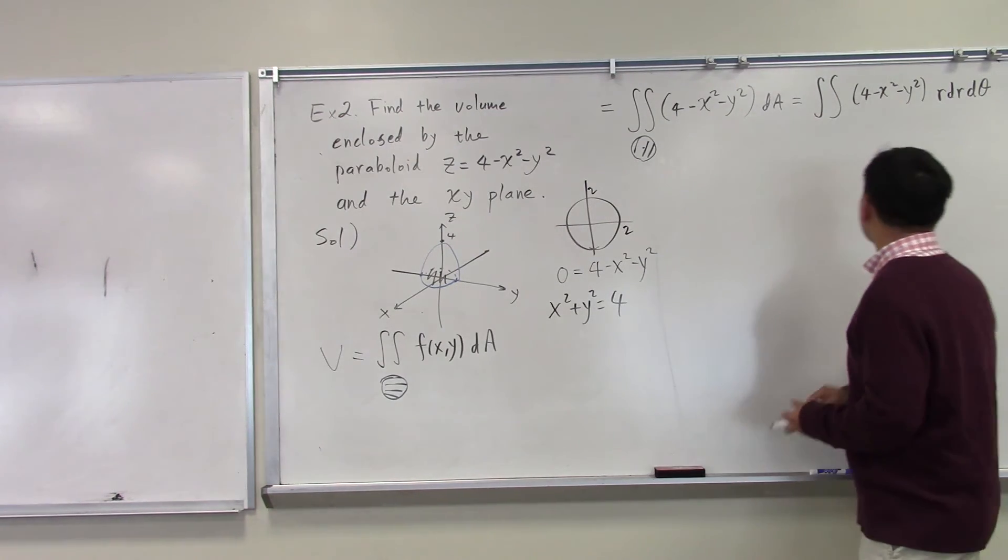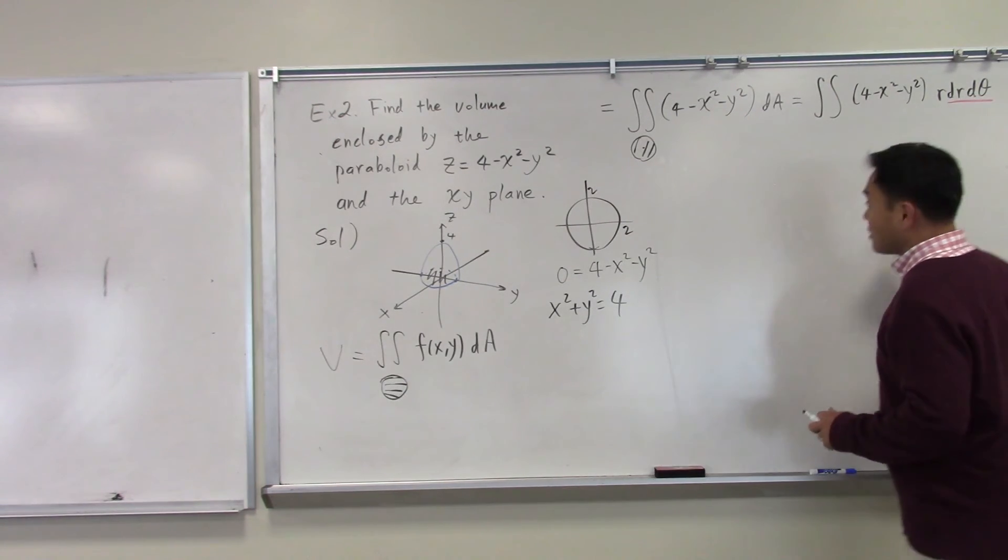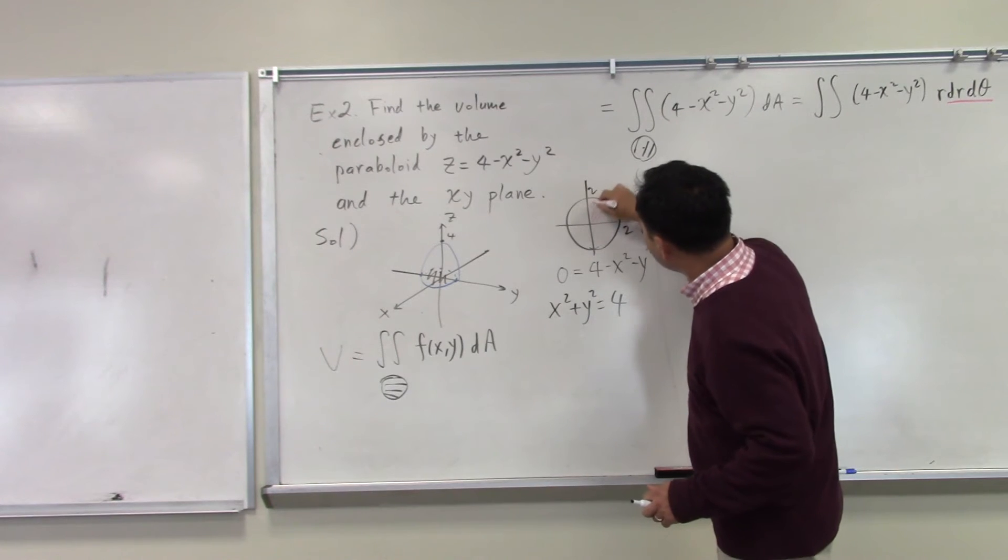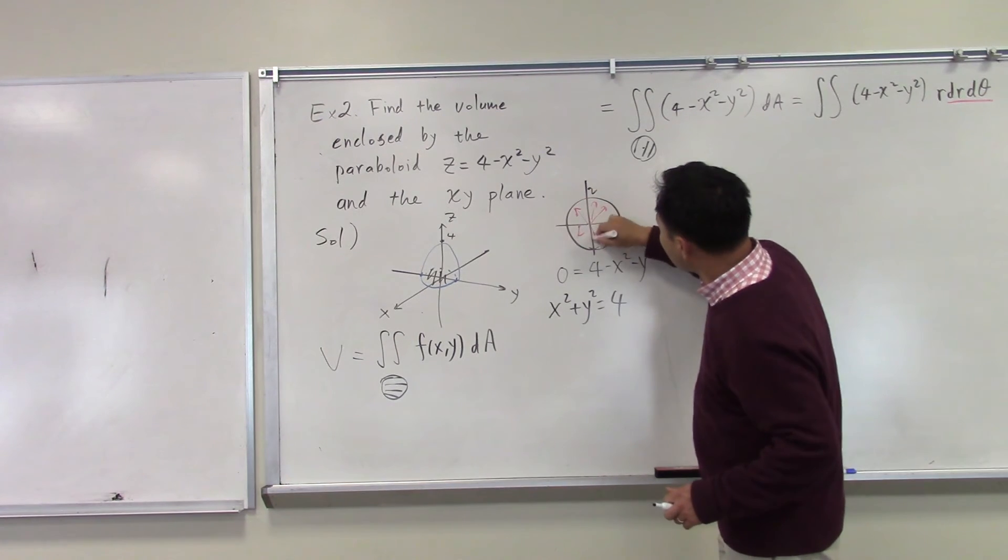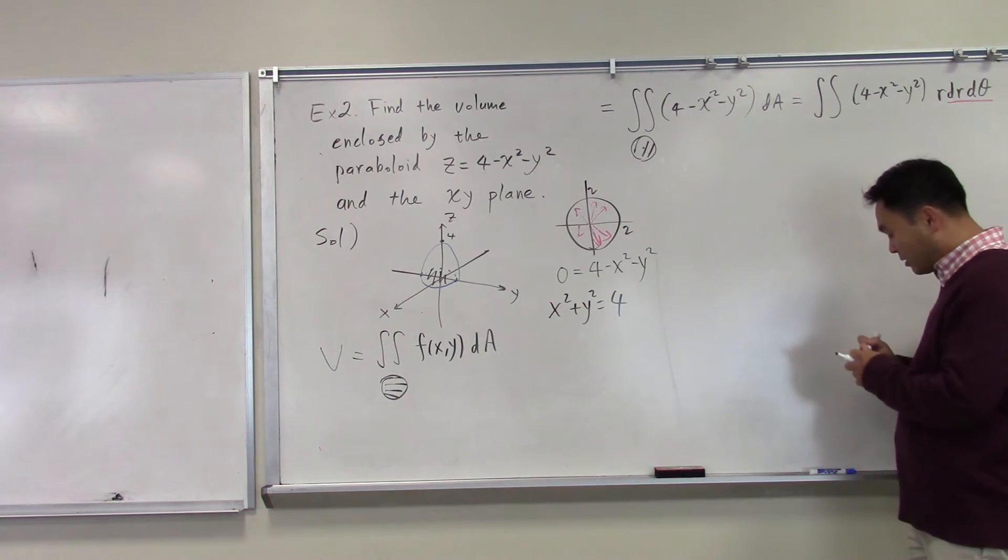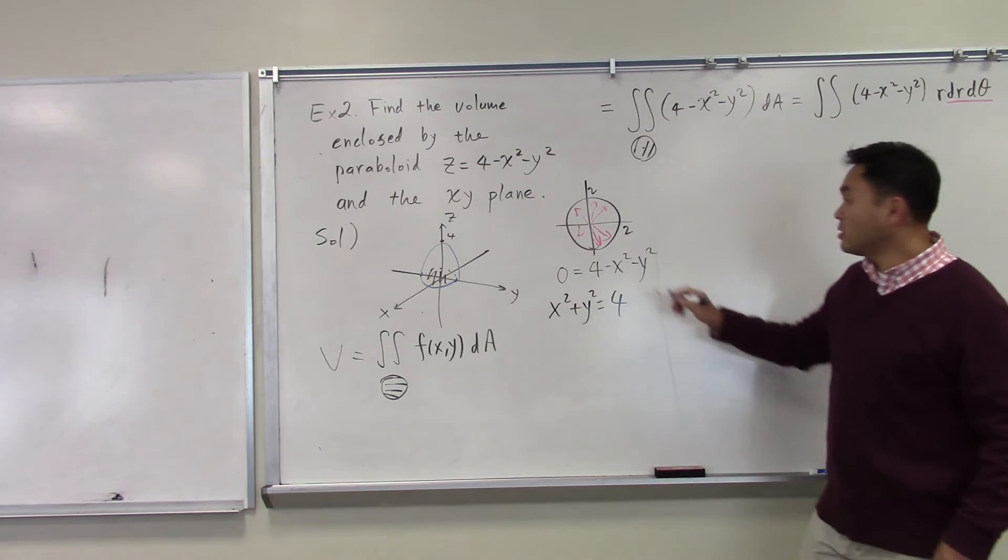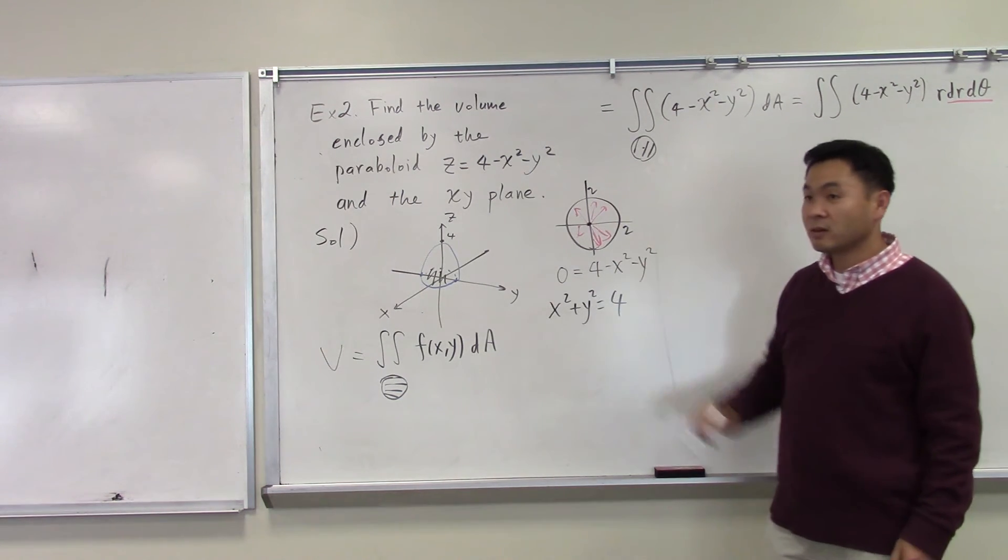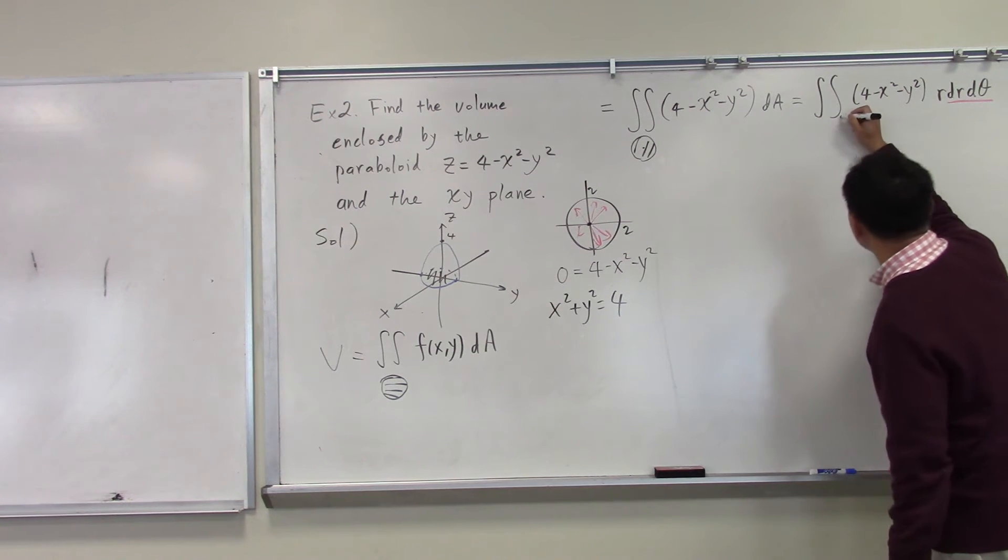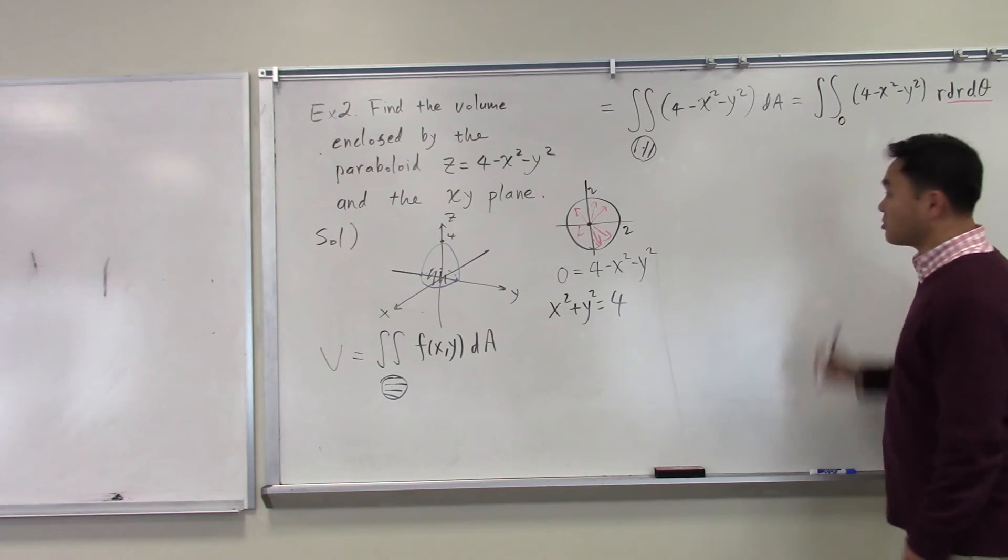Now, since we're using dR dθ, meaning that you have to paint this region radially, think about where R should begin and where R should end. It begins at the origin. Every time when your rays begin at the origin, you put 0.